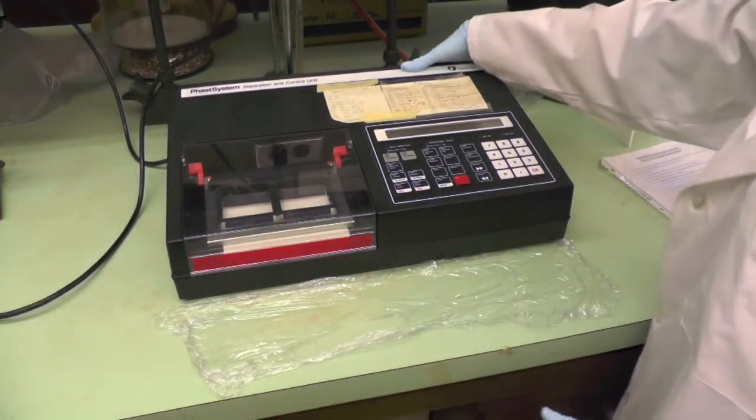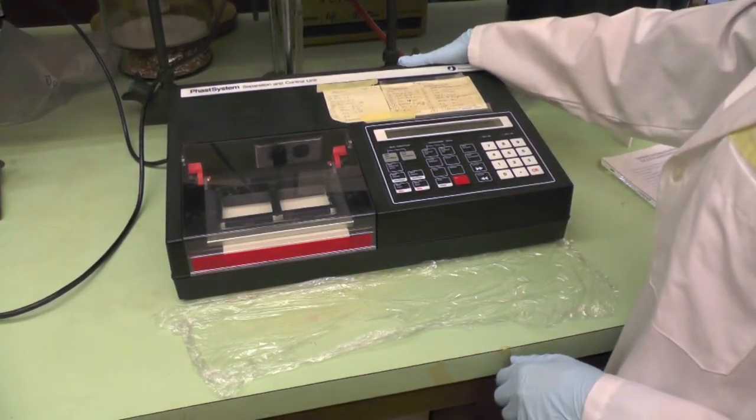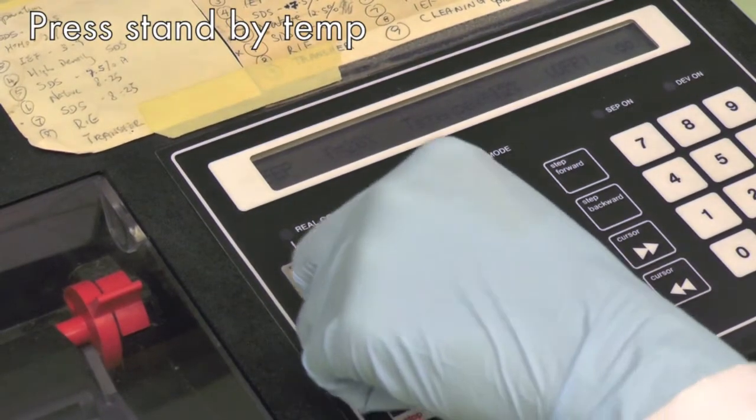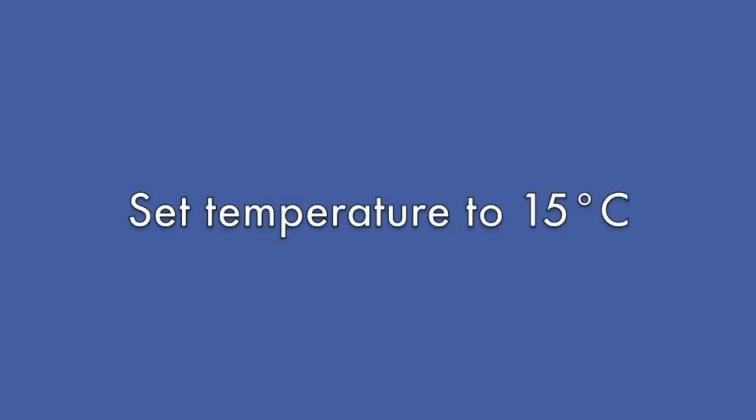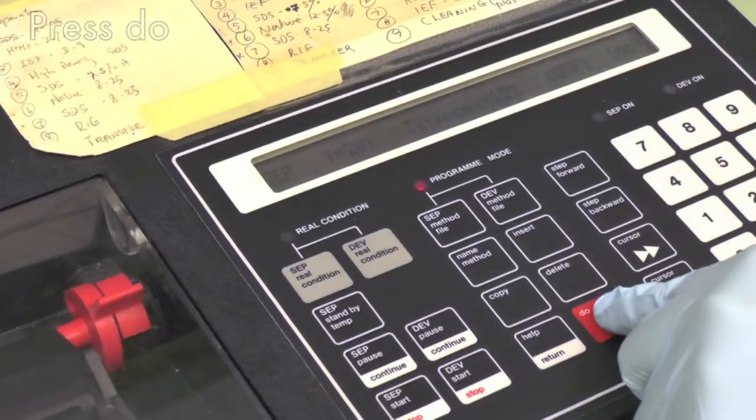Turn on the machine by pressing the button at the back of the system. Set up the machine by pressing standby temperature and set the temperature to 15 degrees Celsius, then press do.